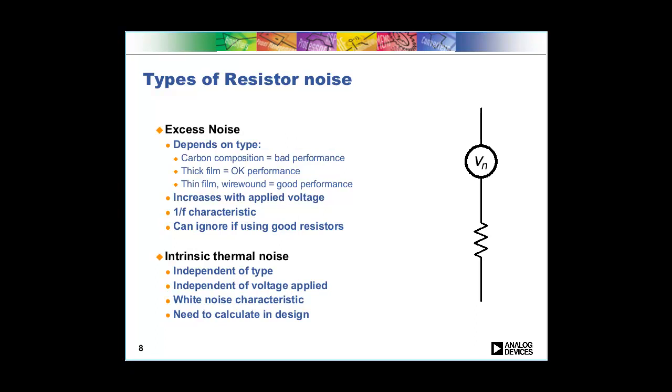You can split metal film into thick film and thin film types, and the thin film is the best performance. The excess noise depends on the amount of voltage that you apply. If you don't apply any voltage, it's not an issue. And it typically has a 1 over F characteristic. So at lower frequencies, it's worse.